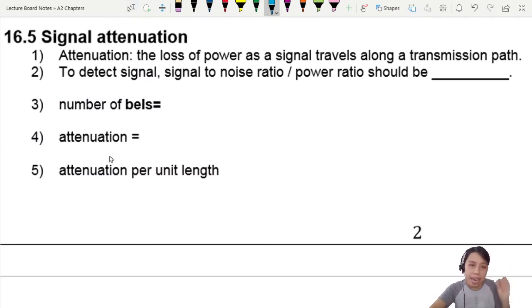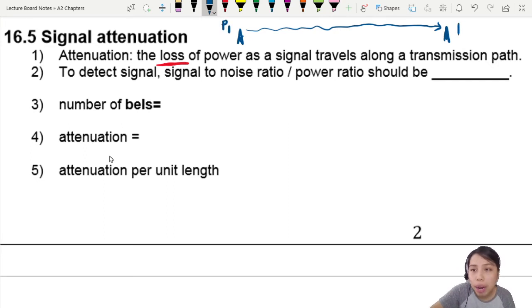Now, the word attenuation means a loss of power, a decrease. Loss of power as your signal travels along transmission path. Maybe you have a transmitter here to a receiver, and you have a wave traveling through a certain distance, a transmission path, and you will lose power. Maybe it is power 1 to power 2, which is now going to be a bit lower because of attenuation.